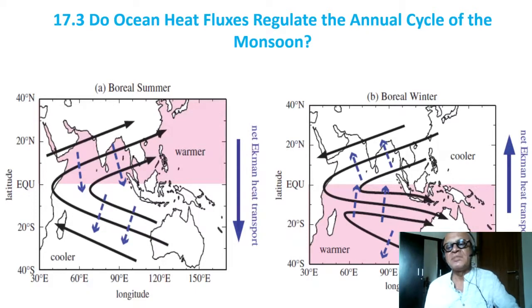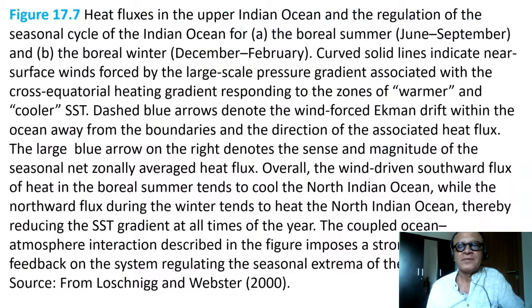Does this end up regulating the annual cycle of the monsoon? This is the key question. The rest of the arguments are based on saying that there does seem to be some sort of regulation happening.